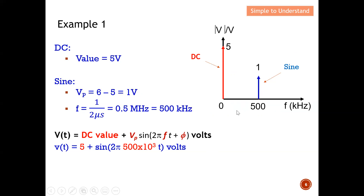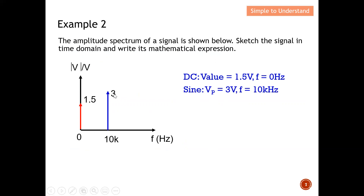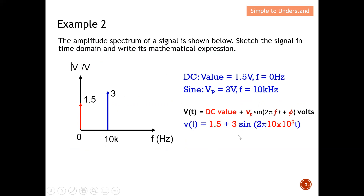For example two, the amplitude spectrum of a signal is shown. We need to sketch it in time domain and write its mathematical expression. From the frequency domain: the DC value is 1.5 volts, and there is a sine wave with Vp of 3 volts at a frequency of 10 kHz. Using the general equation, I substitute: DC is 1.5, Vp is 3, and frequency is 10 kHz. This successfully transforms the frequency domain into a mathematical expression.